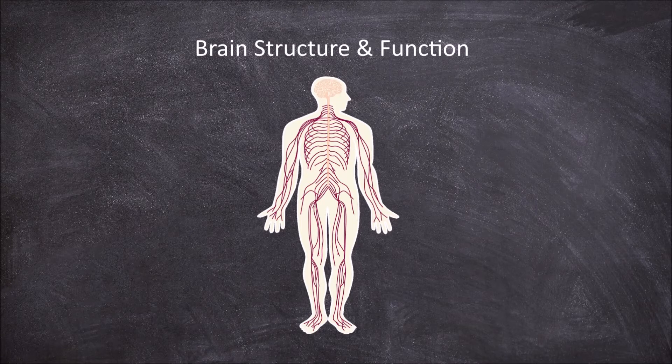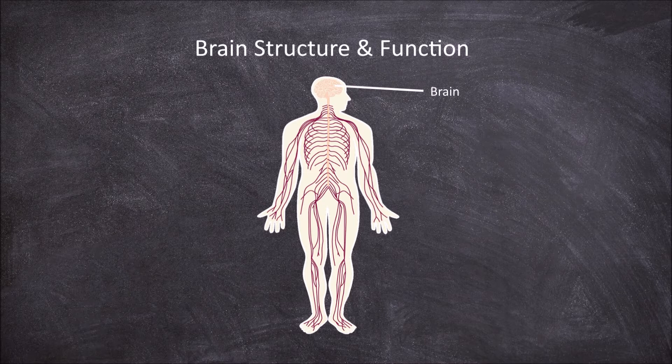In this video we're going to go over the structure and function of the human brain. Brains are structures found in members of the kingdom Animalia and range from simple to complex. The human brain is the central organ in the nervous system of humans.